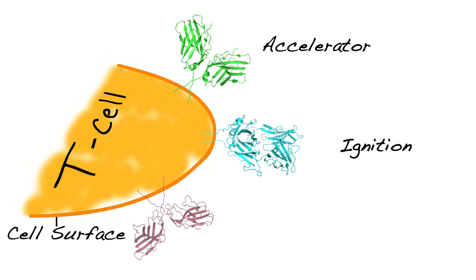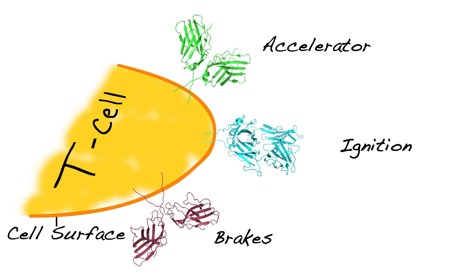At some point, you want to turn off the immune response, and in that case, there are yet another set of proteins on the T cell surface for brakes. These brakes will now work in opposition to the accelerator and bring the whole system back to homeostasis.